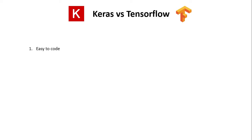The first difference between Keras and TensorFlow is that since Keras is a higher level API, writing code in Keras is extremely easy and creating an entire model will only require a handful of lines. Whereas writing code in TensorFlow is a bit more challenging and is not that easy for beginners.